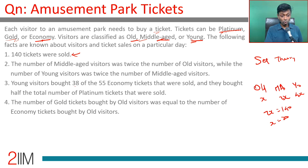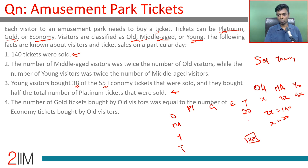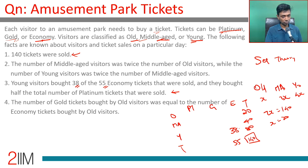Young visitors bought 38 of the 55 economy tickets sold, and they bought half the number of platinum tickets sold. After seeing this, we know the grid will be classified by old, middle-aged, young versus platinum, gold, economy. The totals: old = 20, middle-aged = 40, young = 80, adding to 140. Total economy tickets = 55, of which young economy = 38. I'll draw the table and fill in the data.